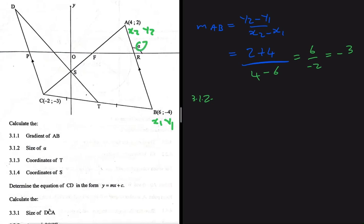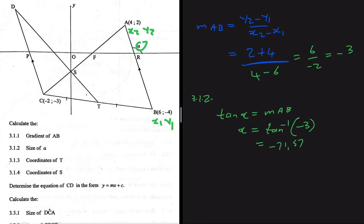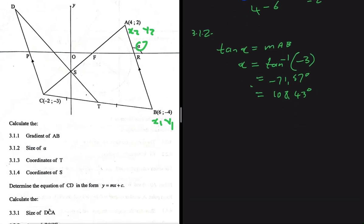Now for 3.1.2, let's calculate the size of this angle. Since we already have the gradient of AB, we can say that angle equals tan inverse of the gradient, which is tan inverse of -3. Putting that into the calculator gives -71.557 degrees. Since we get a negative angle, we add 180 degrees, giving us 108.43 degrees.